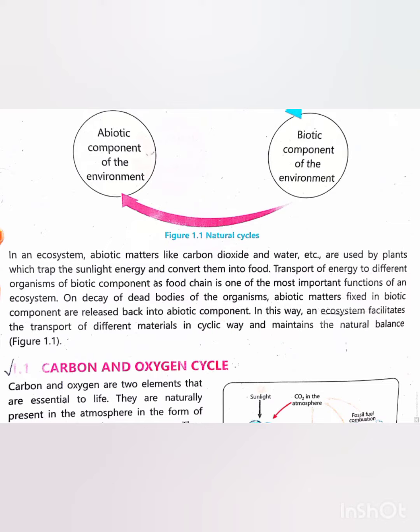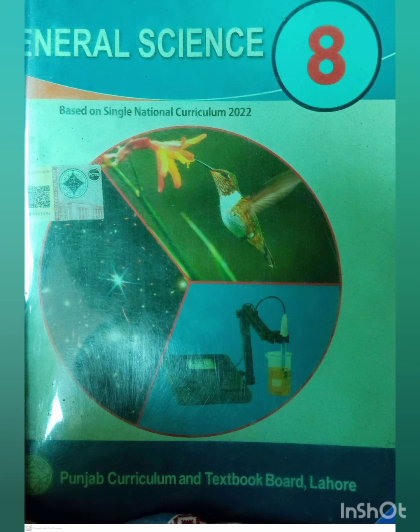When organisms die, abiotic components like carbon dioxide and carbon are again returned to the environment with the help of decomposition. In this way ecosystem facilitates the transport of different materials in cyclic way from abiotic component to biotic component and again biotic component to abiotic component. That's called natural cycle.